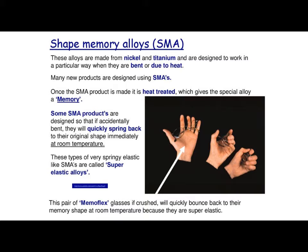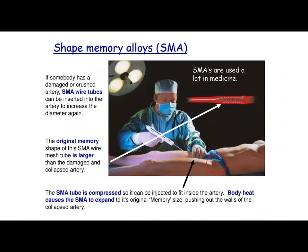There are lots of different applications. These Memoflex glasses have shape memory alloy to help them spring back to their shape in case they are bent. Shape memory alloys also have applications in medicine — for example, if you had a damaged or crushed artery, SMA tubing can be inserted into the artery. Once the body warms up that shape memory alloy, it can expand and actually open up and push out the walls of that collapsed artery. That's a massive medical advantage — you're not having to put anything mechanical in the body; the material is just doing that by itself.